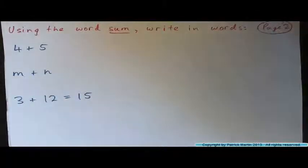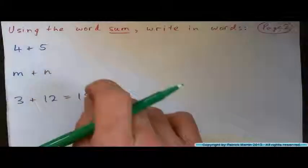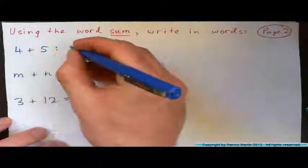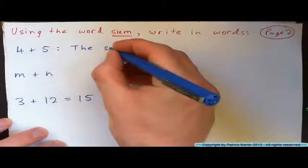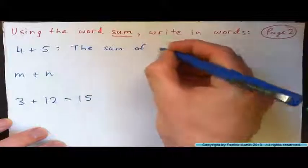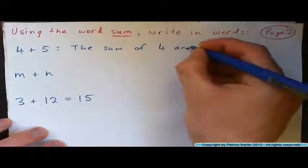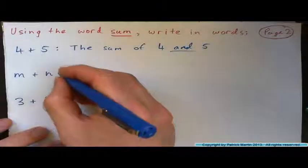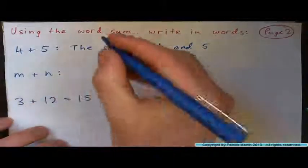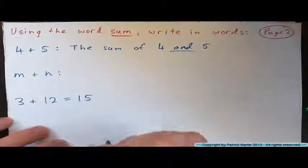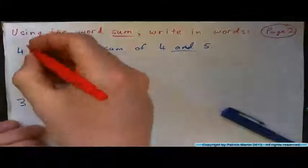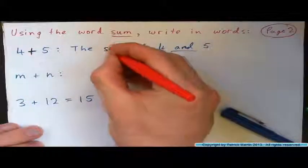Let's go to page two and we're going to use the word sum and write these things in words. So four plus five can be written as the sum of four and five. Watch out for the word and. So the sum of four and five. M plus n, how could you write that? Press pause and write down the answer. So when you have plus, that means it's a sum. Plus, adding, means we're getting the sum.